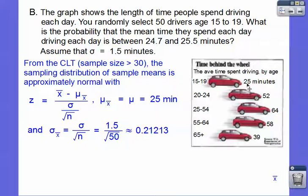From the central limit theorem, since our sample size is greater than 30, if it's greater than or equal to 30, then that means by the central limit theorem that the sampling distribution of our sample means is approximately normal.